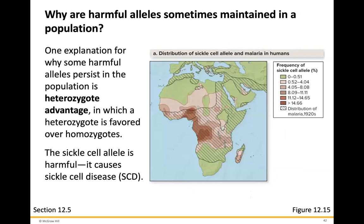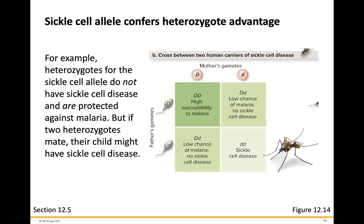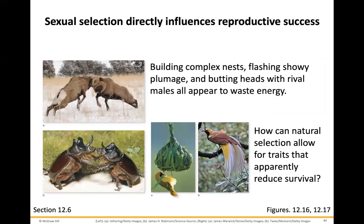Why are harmful alleles sometimes maintained in a population? One explanation is heterozygote advantage, in which a heterozygote is favored over homozygotes. For example, heterozygotes for the sickle cell allele do not actually have sickle cell disease, and they are protected against malaria. However, if two heterozygotes mate and their child becomes a homozygote, then the child can have sickle cell disease. Being heterozygous for sickle cell protects you against malaria, but you run the risk of producing a homozygote who can develop the disease.